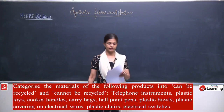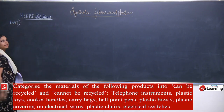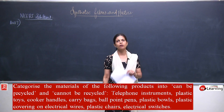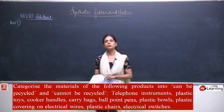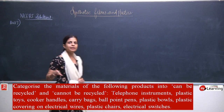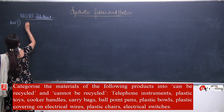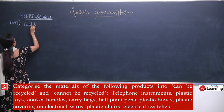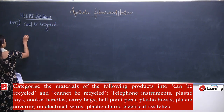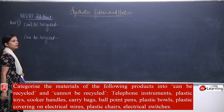We will move to question number 8. The question is: categorize the materials of the following products into 'can be recycled' and 'cannot be recycled.' We have to sort out the given articles into two lists — cannot be recycled and can be recycled.